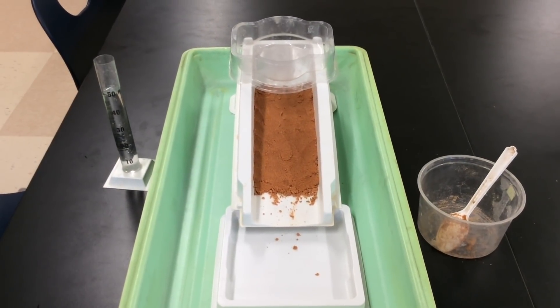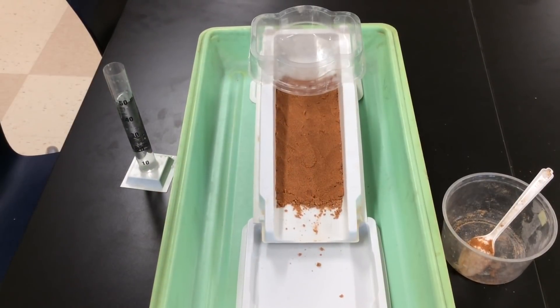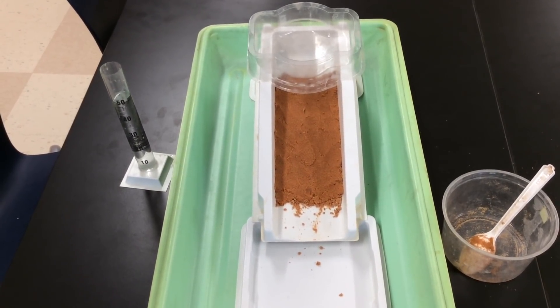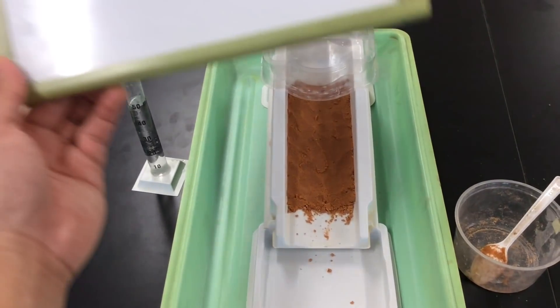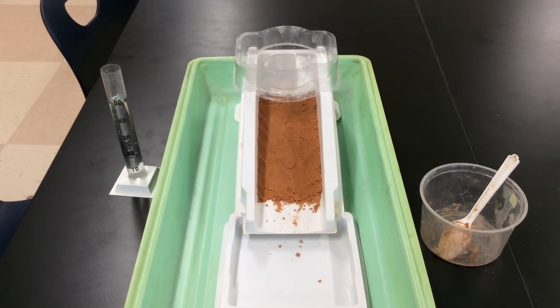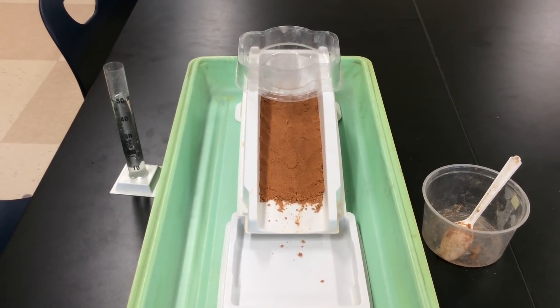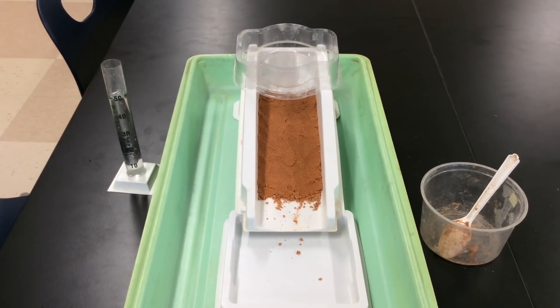You're going to repeat this process until you've made it rain on your river model three times. That means you're not recording anything on your sheet until you've made it rain on your river model three times. Remember that after each time, you want to observe what's happening in the river until all of the water from the rainmaker has drained.